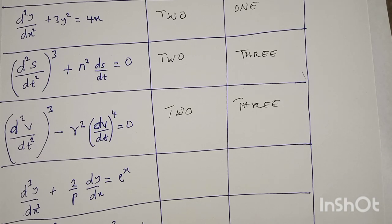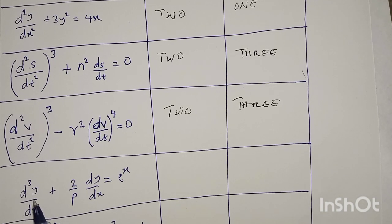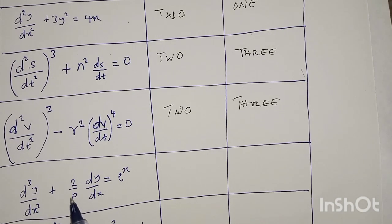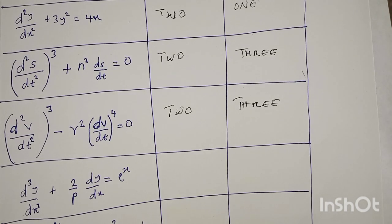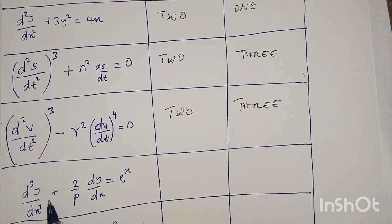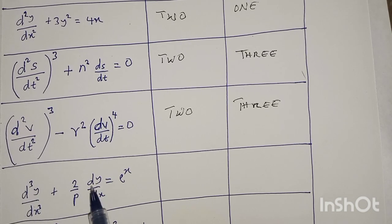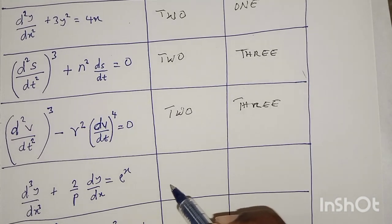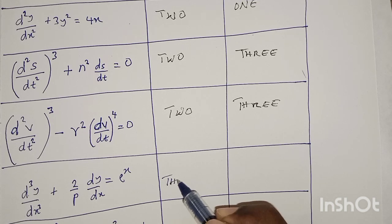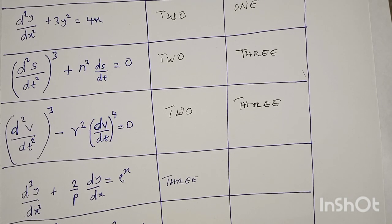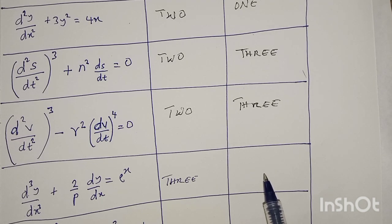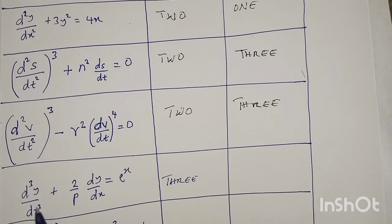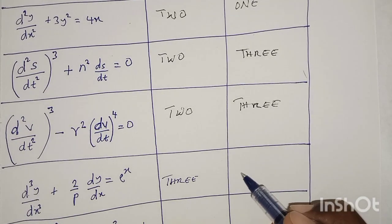Another differential equation is d³y/dx³ + (2/p)(dy/dx) = eˣ. The highest derivative here is d³y/dx³ because it is the third derivative, while dy/dx is the first derivative. So this differential equation is of order 3. The degree is the power of the highest derivative; this highest derivative has no power, therefore the power is 1 and this is degree 1.